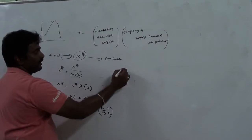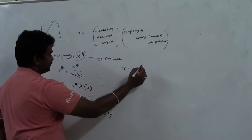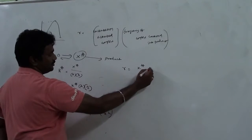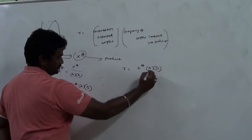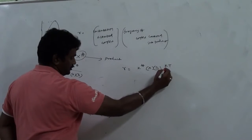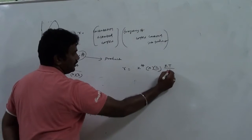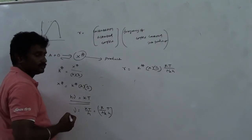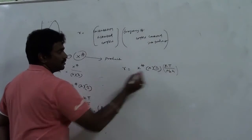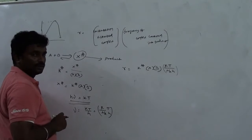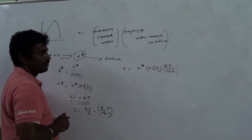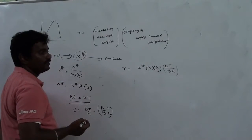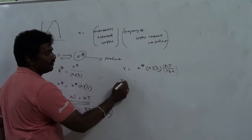Your rate will become: R = K‡[A][B] × (RT/NₐH). This is combined with the original rate expression to derive the full rate equation, incorporating the equilibrium constant K‡ and the frequency factor RT/NₐH.